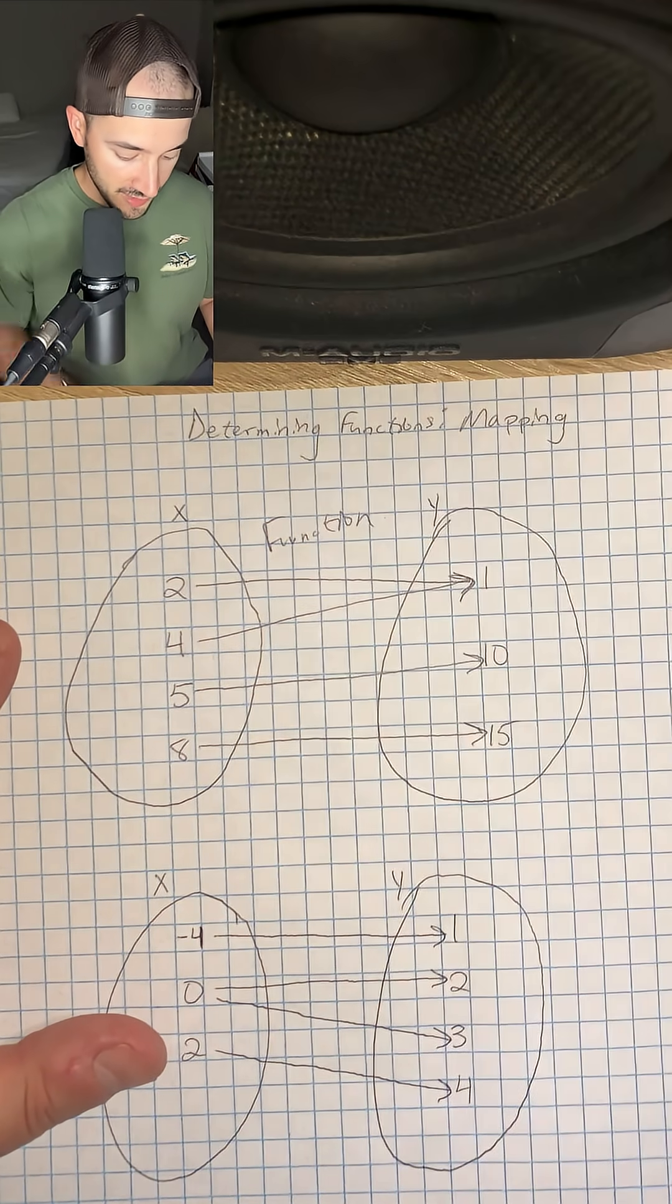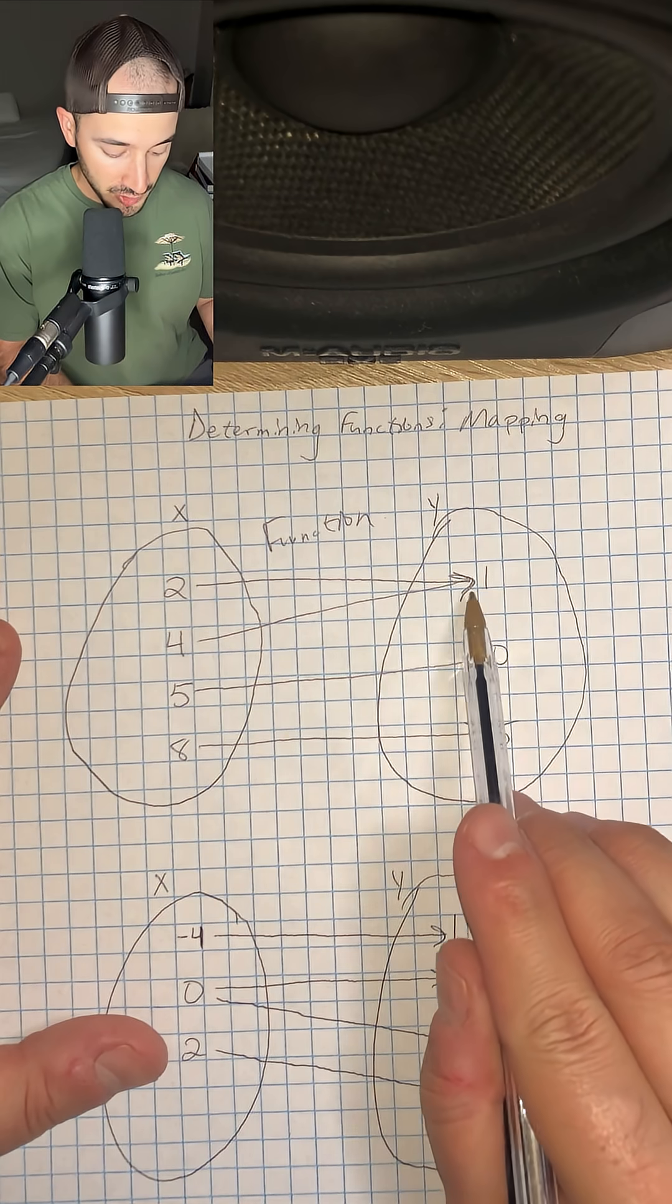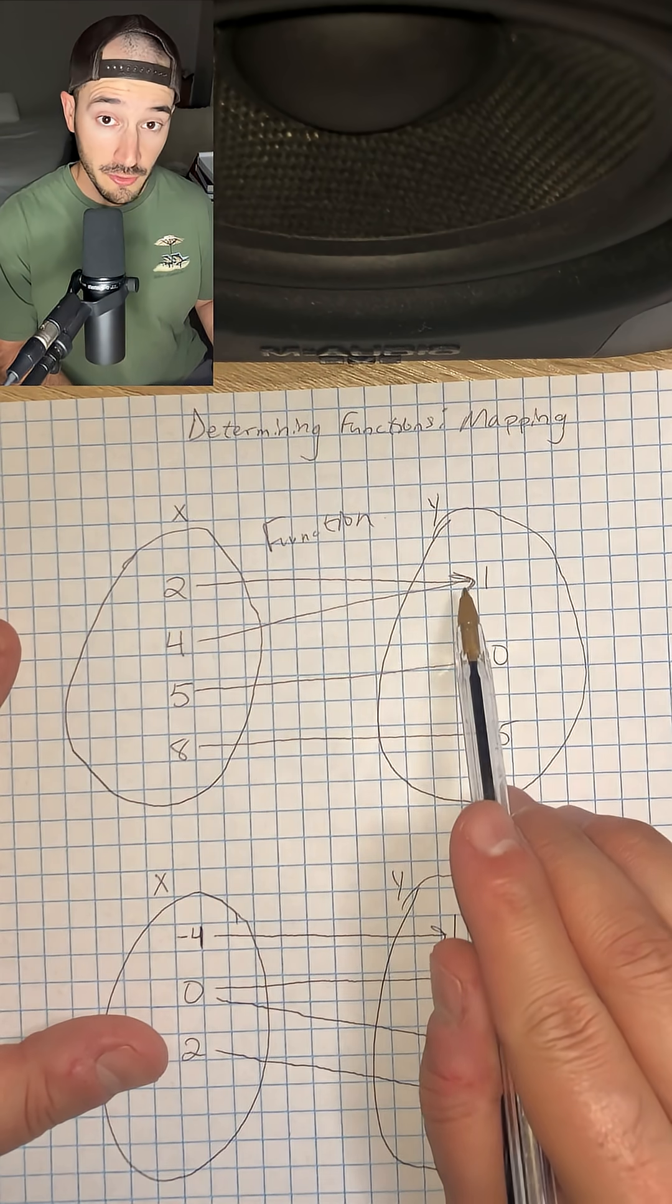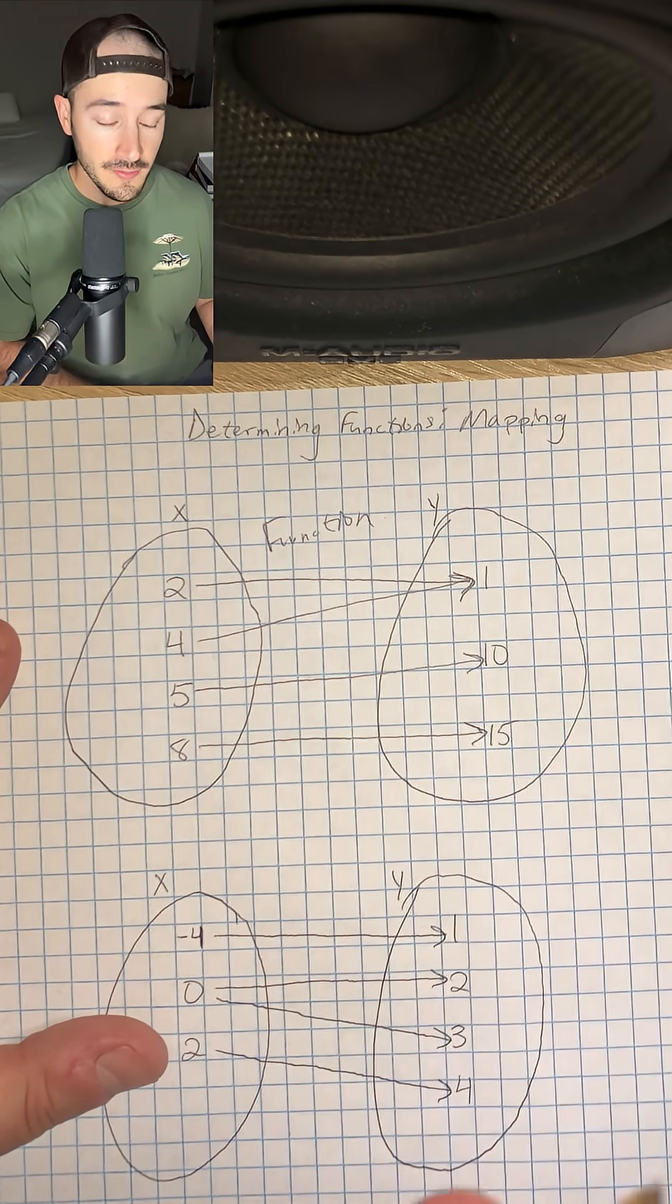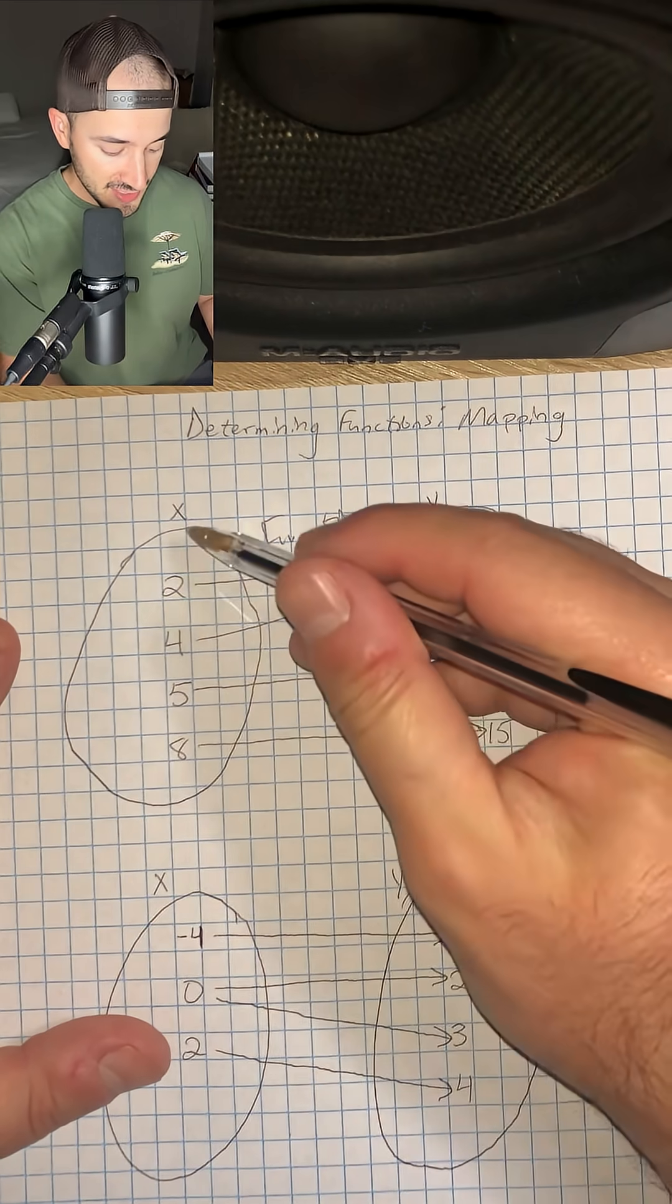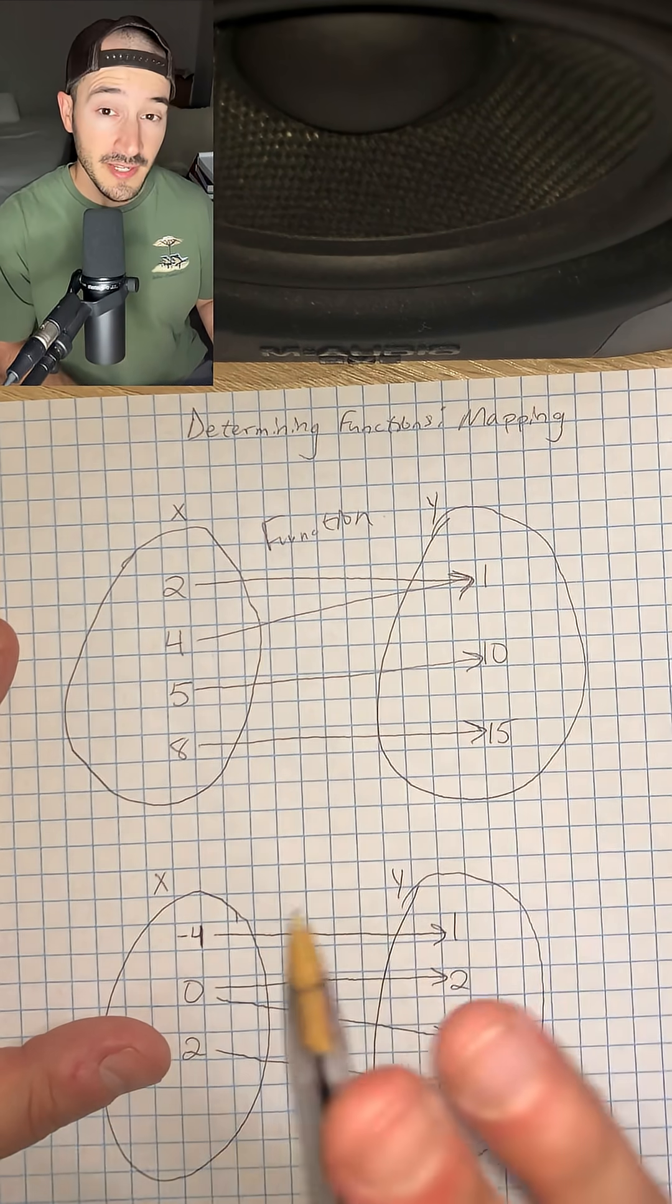Now notice that over here on the y values we do have a y value that has two arrows pointing towards it. That's okay. As long as each input only has one output, that's the main thing.